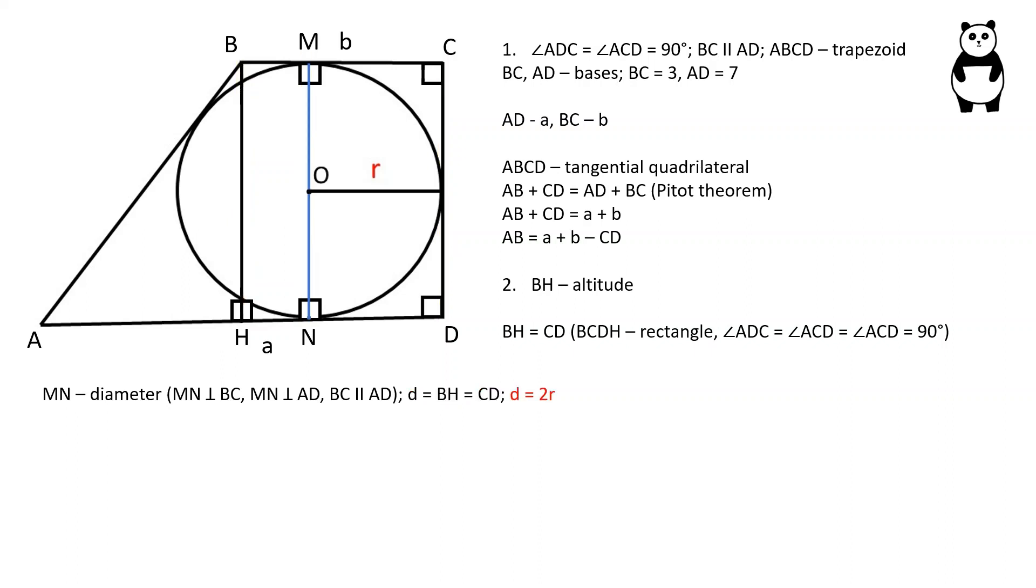And since diameter is equal to 2 times radius, we can write down this formula as AB is equal to A plus B minus 2 times radius.